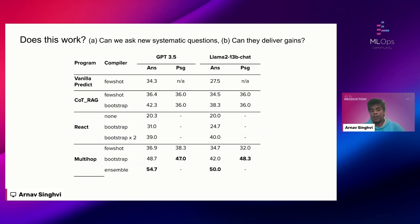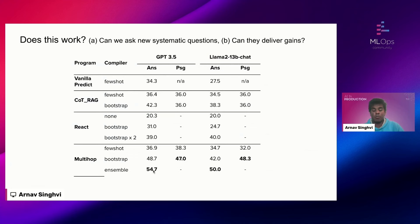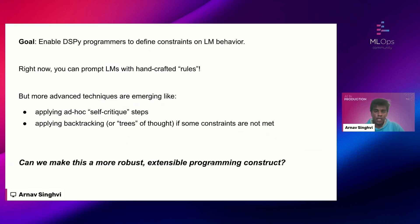Looking at the DSPy paper, we can see these gains actually exist — not in high-scale models but in GPT-3.5 and LLaMA 2 13B Chat. On the metrics of answer exact match and passage retrieval recall, we can go from a 34.3 answer metric all the way to a 54.7 gain in the multi-hop situation. We see similar gains in LLaMA 2, going from 27.5 to 50 percent.